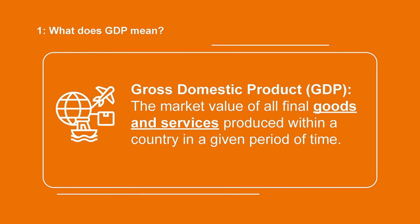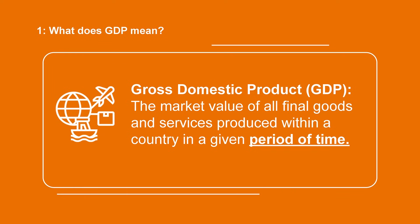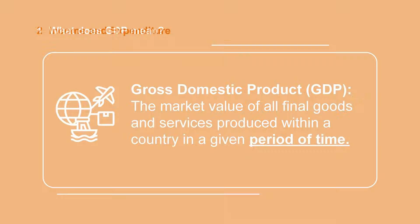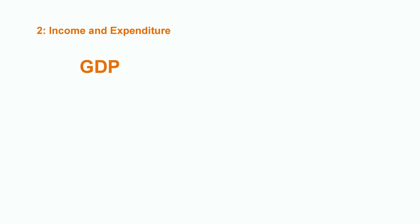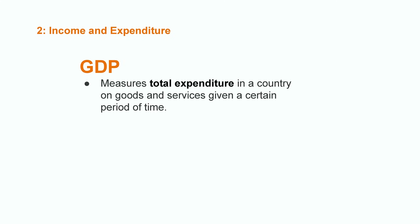Goods and services include tangible goods such as food or clothes, and intangible goods such as haircuts, consultancies, house cleaning, etc. And finally, we are referring to the production inside a country in a certain period of time, usually in years or quarters. We could actually say that GDP measures the total spending or expenditure in a country in a certain period of time.